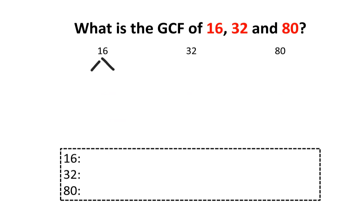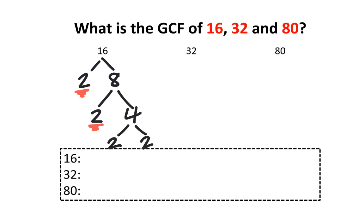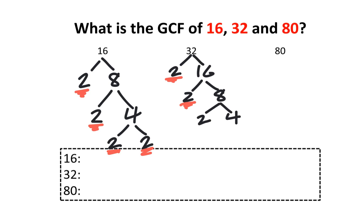I'm going to start by breaking down 16. Think of two numbers that multiply to 16 — I can think of 2 and 8. 2 is a prime number, so we're going to stop there. I can break down 8: think of two numbers that multiply to give you 8 — I can think of 2 and 4. 2 is prime, so we stop there. 4 can be broken up further: think of two numbers that multiply to give you 4 — I can think of 2 and 2, both of which are prime numbers. We're going to do the same thing with 32. Think of two numbers that multiply to give you 32 — I can think of 2 and 16. 2 is prime, so we stop. 16 breaks down into 2 and 8; 8 breaks down into 2 and 4; and 4 breaks down into 2 and 2, both of which are prime numbers.